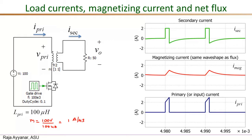During the on interval, the primary current is I_primary = I_mag + I_secondary'. With a 1:1 turns ratio, I_secondary' = I_secondary = 2 A. Adding the linearly rising magnetizing current (0 to 1 A) to the constant 2 A load component, the primary current rises from 2 A to 3 A over the 1 μs on interval.